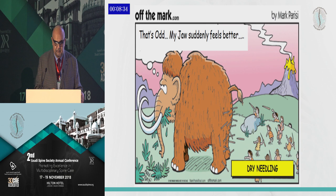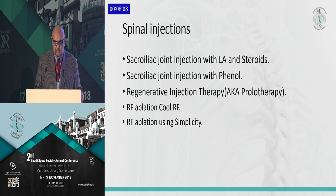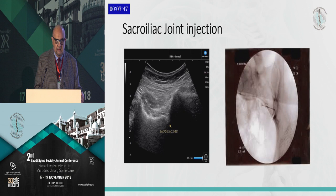For spinal injections, the most common one is SI injection with local anesthetic and steroids. We use the double paradigm technique — one time with lidocaine, one time with bupivacaine — which gives more consistent results. The SI injection can be done with ultrasound or under fluoroscopy, and we usually inject the local anesthetic and steroids in the lower one-third where there's the actual synovial joint.